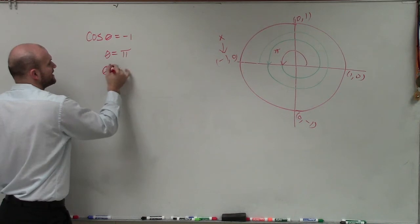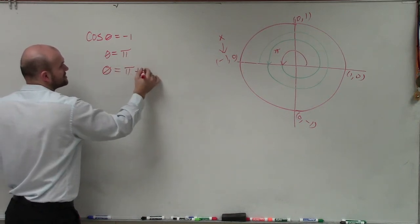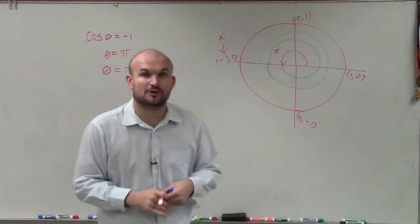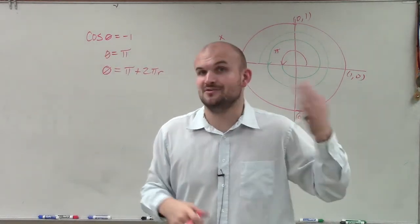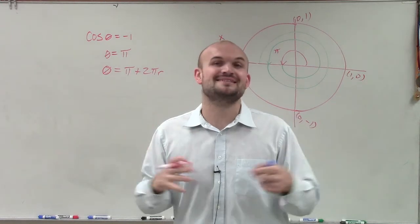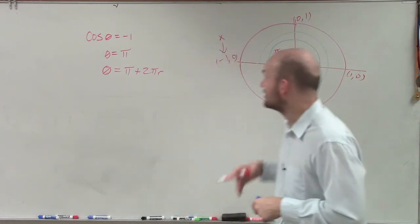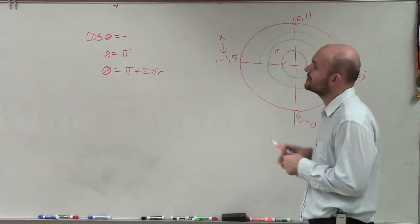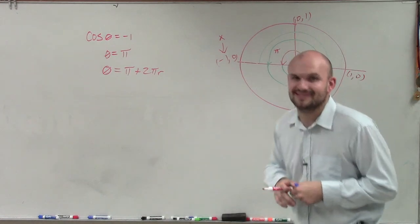If I asked you to find all of the solutions, that would just be pi plus 2 pi r, where r represents the number of times that we're going to keep on going around, which is a variable. So that means it's going to be indefinite solutions. There you go, ladies and gentlemen. That is how you solve for cosine of theta equals negative 1. Thanks.